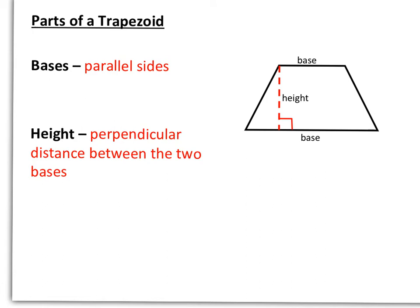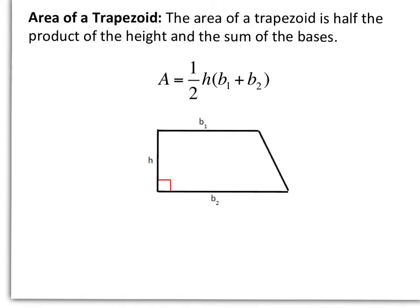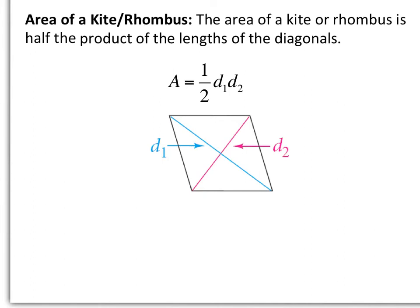Parts of a trapezoid: the bases are the parallel sides, and the height is the perpendicular distance between the two bases. The area of a trapezoid is half the product of the height and the sum of the bases — the sum of the bases is in parentheses, so we always do that operation first. The area of a kite or rhombus is half the product of the lengths of the diagonals: area equals one-half times D1 times D2.